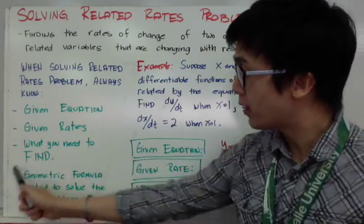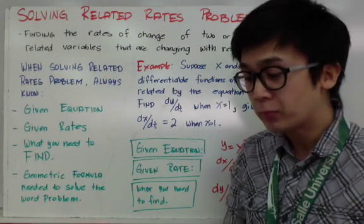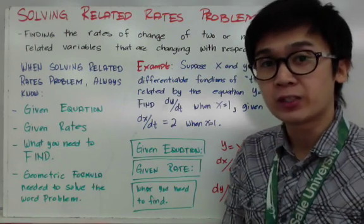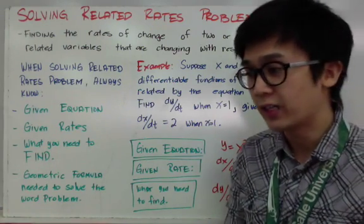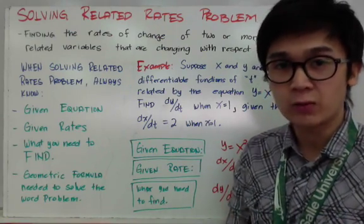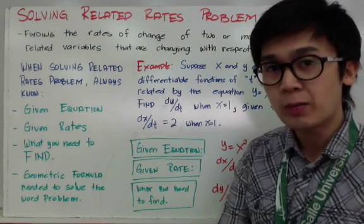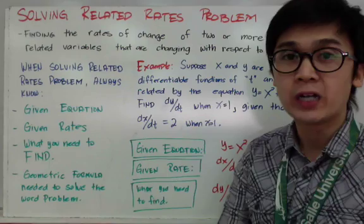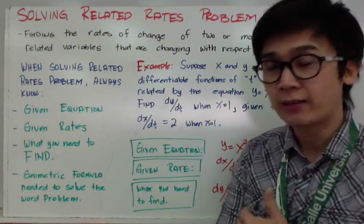The fourth tip is that you should know and remember most of the geometric formulas you've learned before, like finding the area of a circle, the area of a square, the volume of a cube, and so on. You need to be familiar with these formulas because sometimes they are not going to be explicitly given in a word problem.